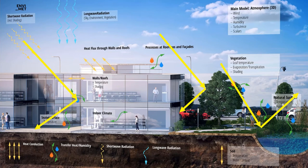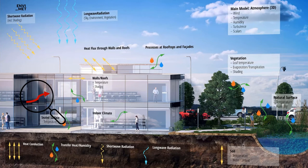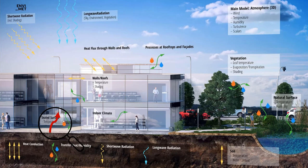Secondary radiation is either reflected short-wave radiation — imagine short-wave radiation coming down and then being reflected on objects. This can be buildings, vegetation, and of course surfaces. Another part would be long-wave radiation emitted from objects. All the objects in the model area have a certain temperature and depending on the temperature and their emissivity, they emit long-wave radiation — from buildings, surfaces, and vegetation. So secondary radiation is short-wave reflected radiation and long-wave radiation emitted from objects.